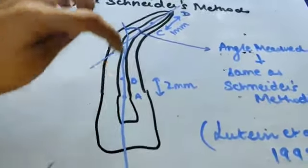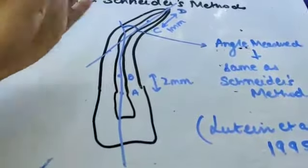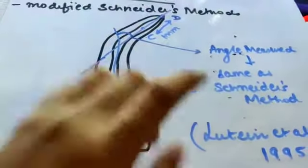These two points are joined, and the angle at which these two lines intersect is measured, just as in Schneider's method.